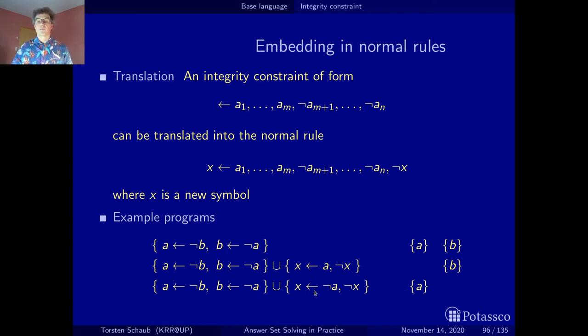Simply because if we have, if you look at the stable model with b, this makes not a true, hence this negative body literal is satisfied and the odd loop is activated,